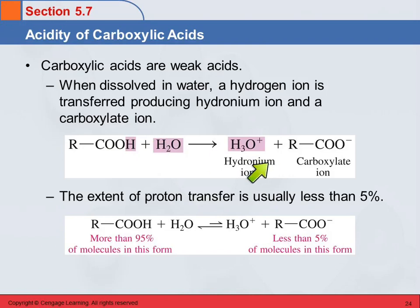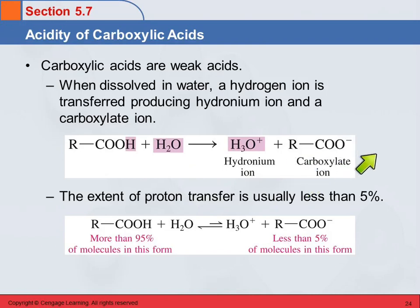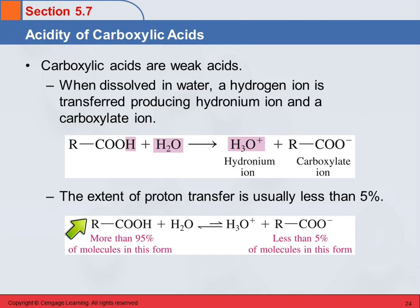This reaction does proceed in this direction and we form hydronium ions. What we have left of the carboxylic acid is called a carboxylate ion — we've lost a hydrogen ion, so now we've got a negative ion. But this is a weak acid, so the extent of that proton transfer is usually less than 5%. It just goes in this direction a little bit. Mostly, more than 95% of the molecules are going to be the intact molecules, and only 5% or less are going to be ionized.